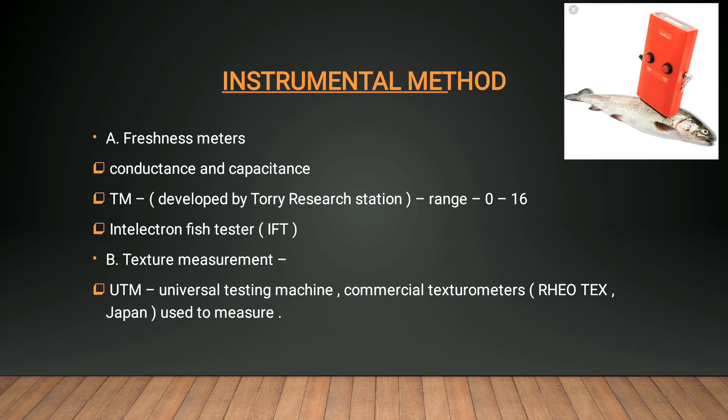Another instrumental method is the Torrey metric scale, as we can see in the image here. This was developed by Torrey Research Center and the range is 0 to 16 — an important point to remember. There is also the electronic fish tester and IFT method. For texture measurement, the Universal Testing Machine (UTM) and commercial texturometers are used.